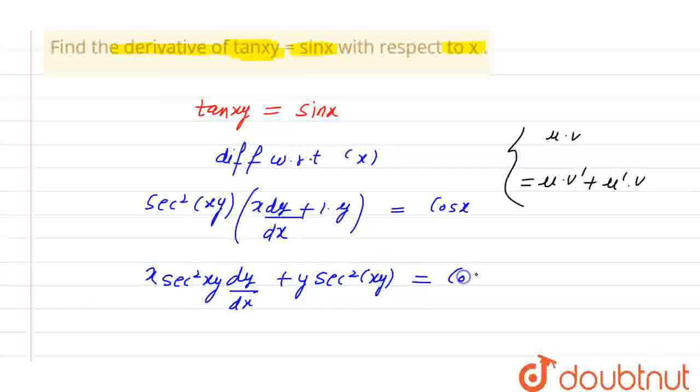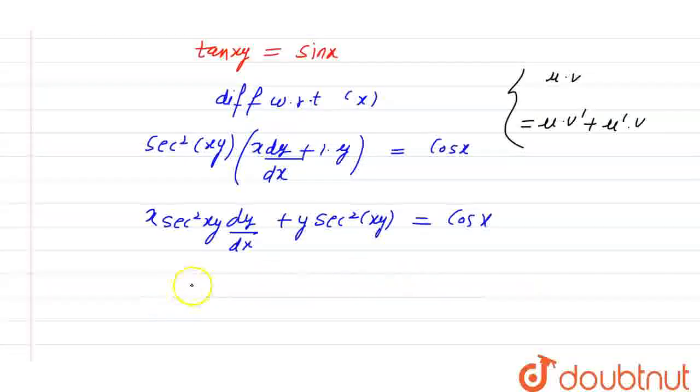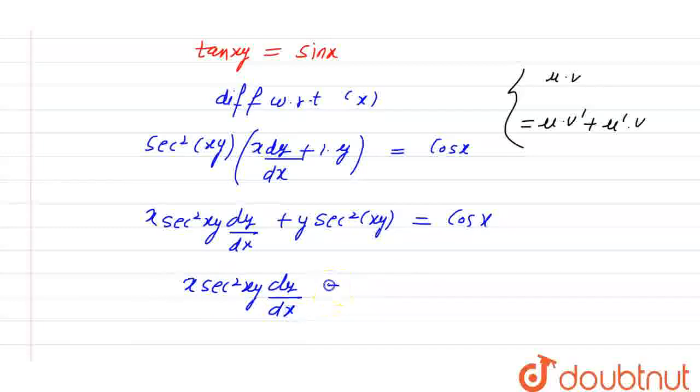So, we will get x into secant square xy into dy divided by dx plus y into secant square xy equal to cos of x. And the value of dy divided by dx, the value of dy divided by dx, x secant square xy into dy divided by dx equal to cos of x minus y into secant square xy.